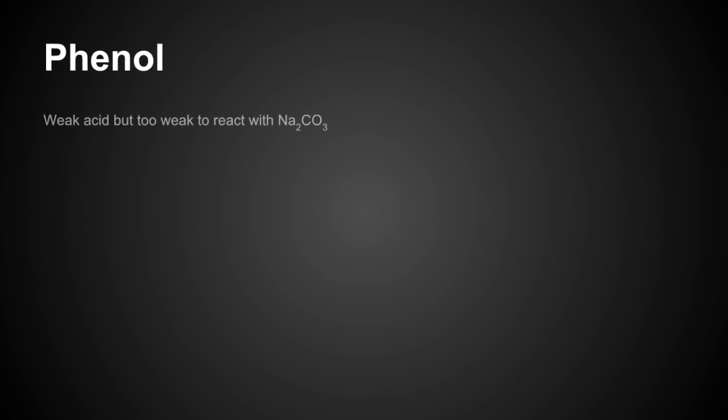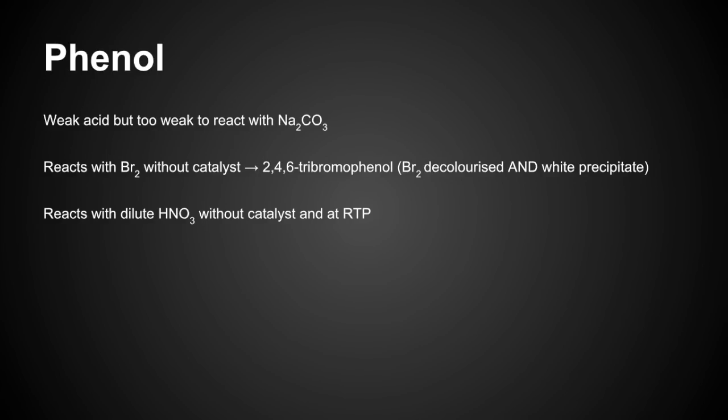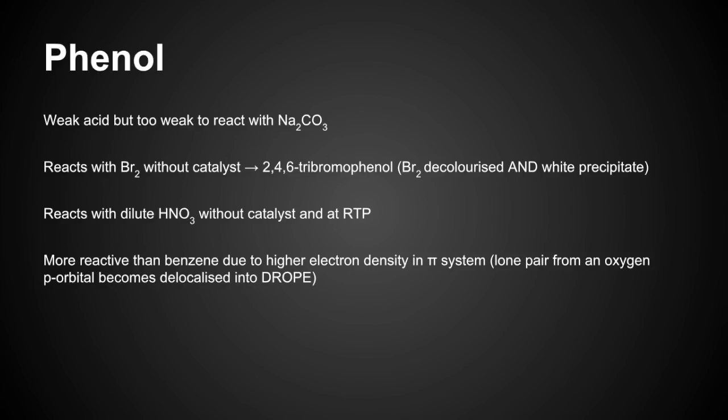Phenol next. Phenol's a weak acid, but it's too weak to react with sodium carbonate, so you don't get effervescence. It reacts with bromine but doesn't need a catalyst, unlike benzene, and you get 2,4,6-tribromophenol. The bromine is decolourised, but you also get a white precipitate, which people often forget. It reacts with dilute nitric acid, not concentrated like benzene, doesn't need a catalyst, and reacts at room temperature and pressure. It's far more reactive than benzene because it has a higher electron density in its pi system. The lone pair from the oxygen p-orbital becomes delocalised into that delocalised ring of pi electrons.